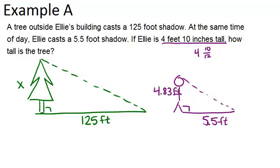She's about 4.83 feet tall and her shadow is 5.5 feet long. These two triangles are similar because it says they're outside at the same time of day. The sun would be hitting them at the same angle. That means that we can set up a proportional equation. The 125 and 5.5 have to be proportional to the x and the 4.83.